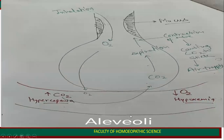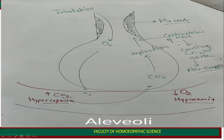In normal inhalation, O2 comes to the alveoli and then carbon dioxide transfers out through exhalation. But in cases of chronic bronchitis, air gets trapped and hypercapnia and hypoxia occur because mucus is obstructing the air tube, causing carbon dioxide to accumulate in the blood vessels and causing air trapping.